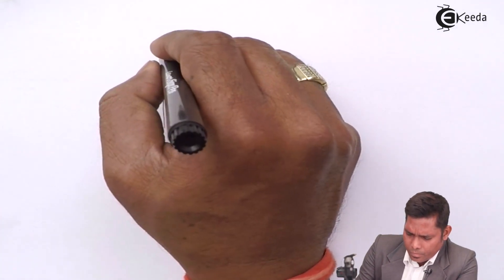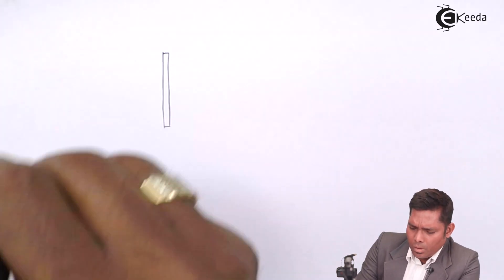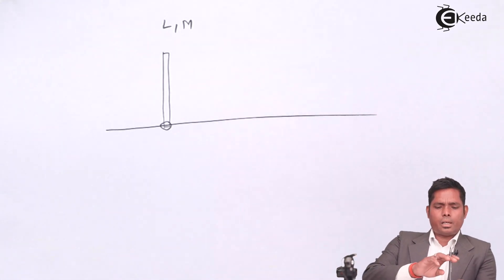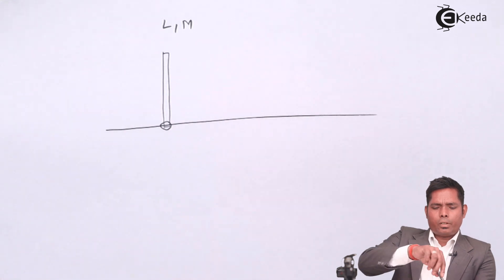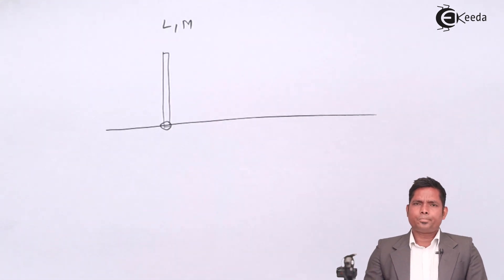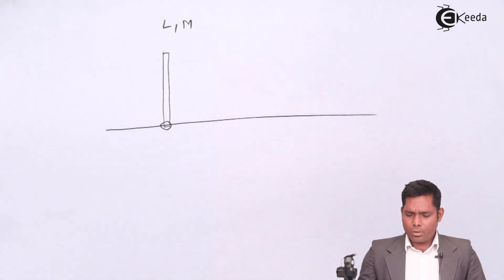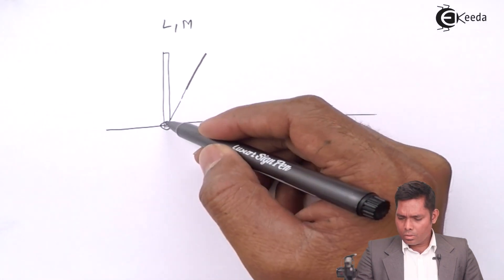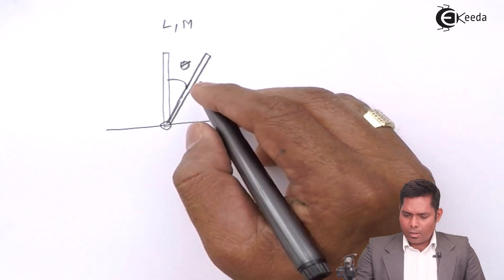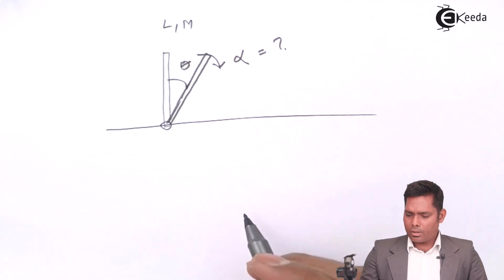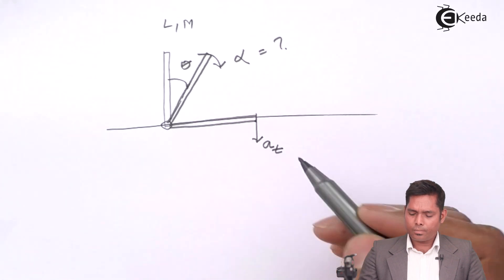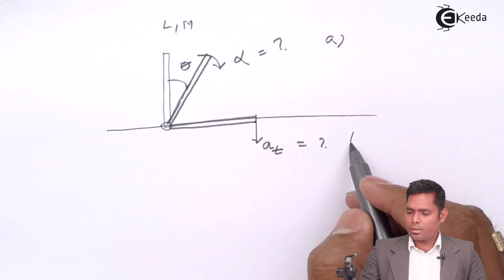This is the situation: the rod of mass M and length L is pivoted at one end. When you release it, it will fall down. When it is making an angle theta, what is the acceleration at that time? Because torque is there, acceleration will be there. Part A is finding alpha at angle theta, and Part B is finding tangential acceleration at the horizontal position.